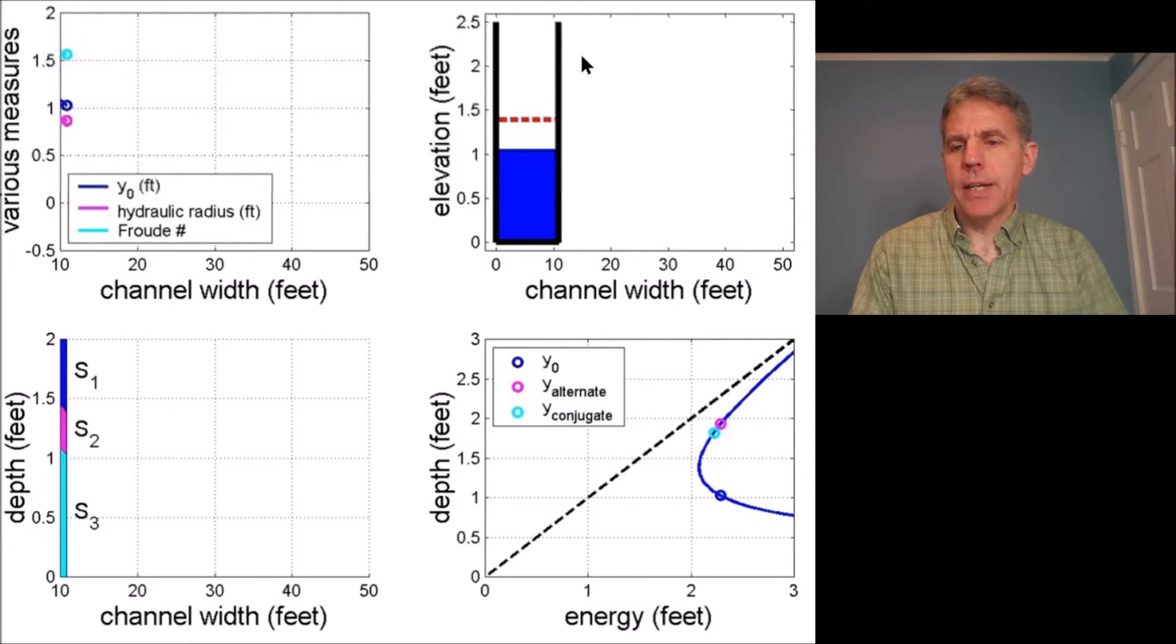This upper right subplot is a cross-sectional view of the channel itself. The red dashed line is critical depth. Actual depth is shown by the blue patch on the screen.